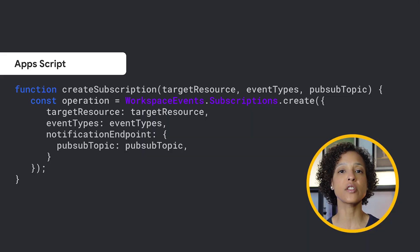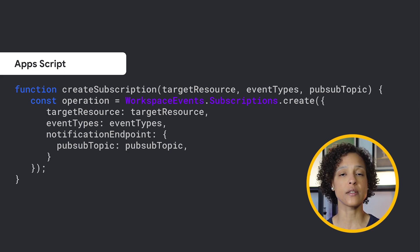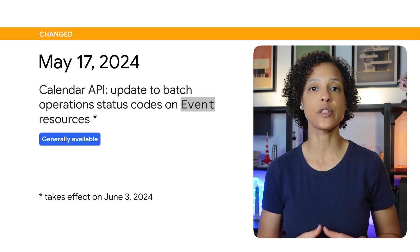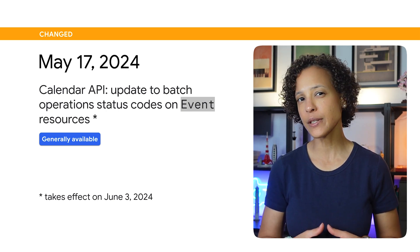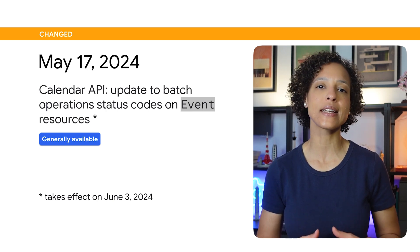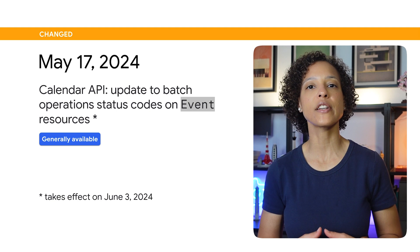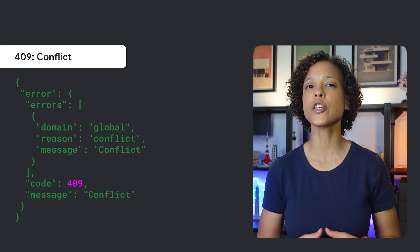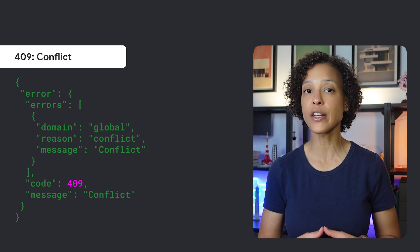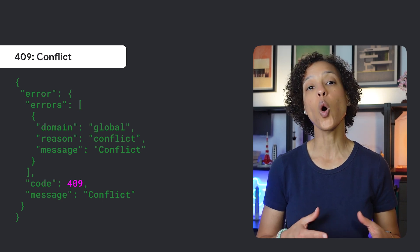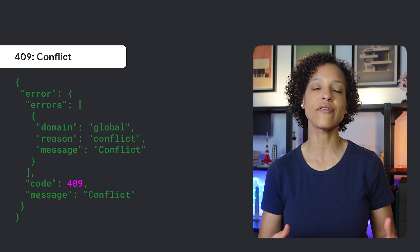On screen, you see an example of subscribing to a Google Workspace resource using this new advanced service. As of June 3, 2024, for batch operations on event resources, a batched item returns an HTTP 409 conflict status code if the batched operation can't successfully execute that item due to conflicts with other requested batched items. To handle this error, we suggest you exclude all successfully finished and failed batched items and retry remaining items in a different batch operation or by using single event operations.